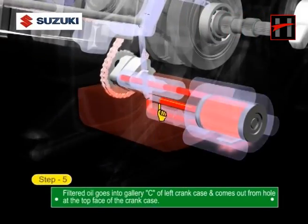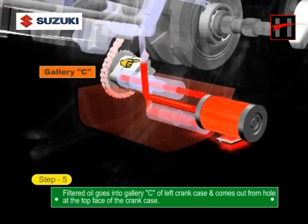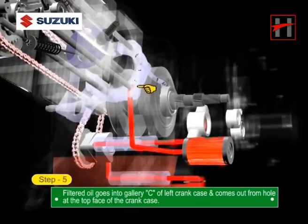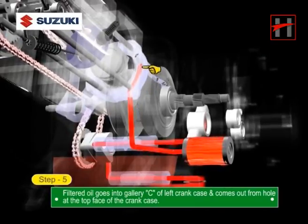Step 5: Now the filtered oil goes into gallery C of left crankcase and comes out from the hole at the top face of the crankcase.